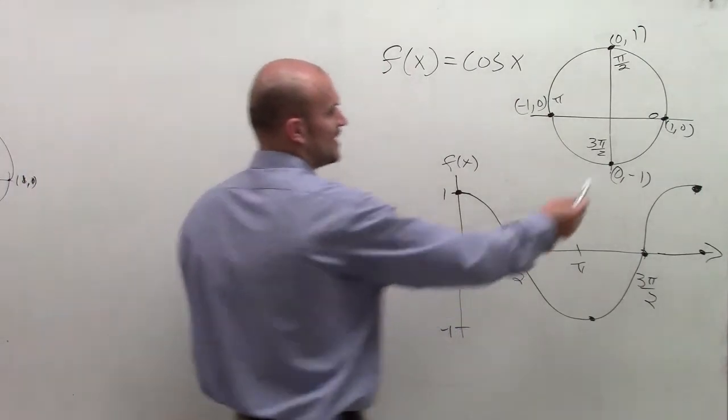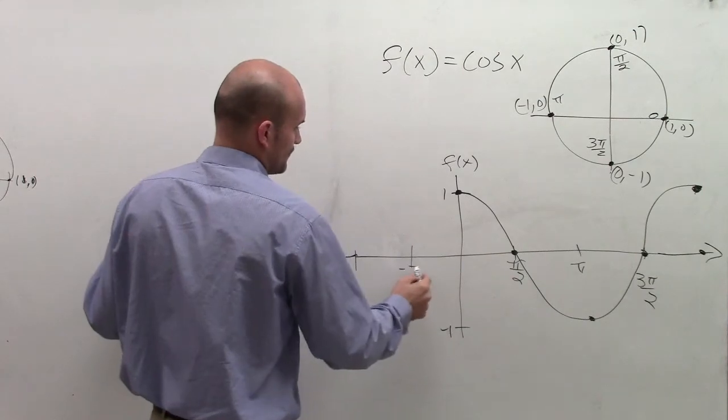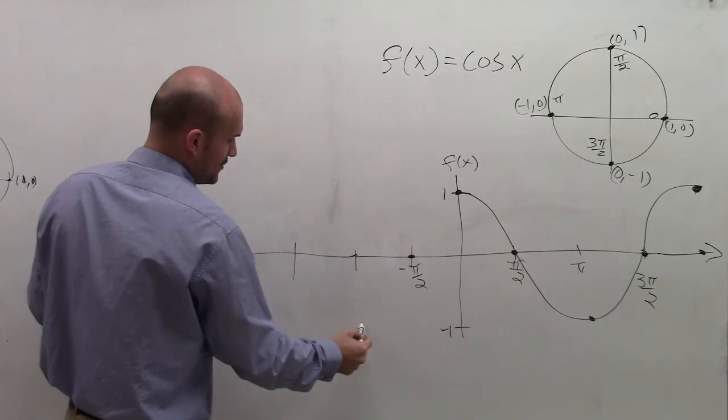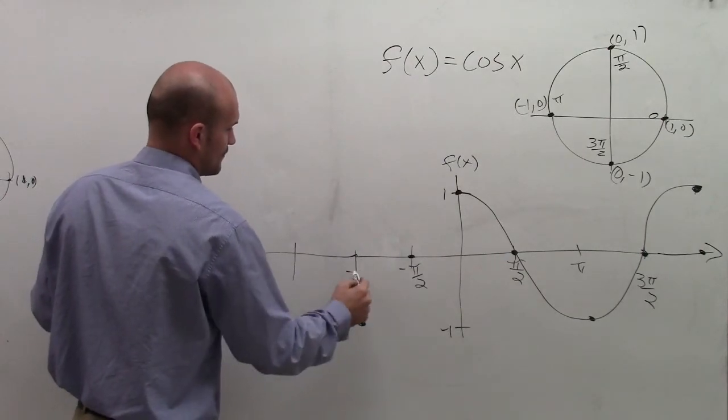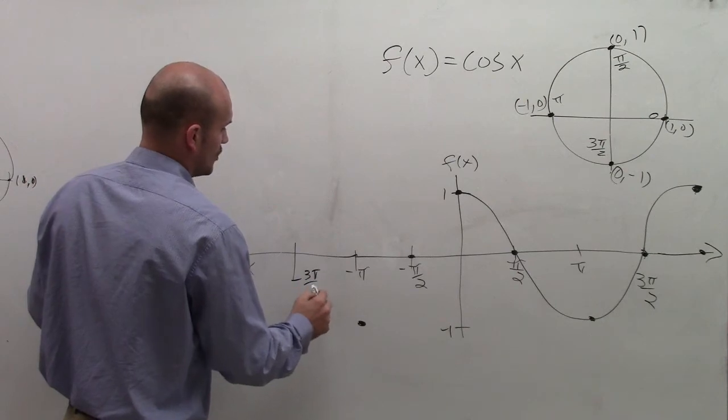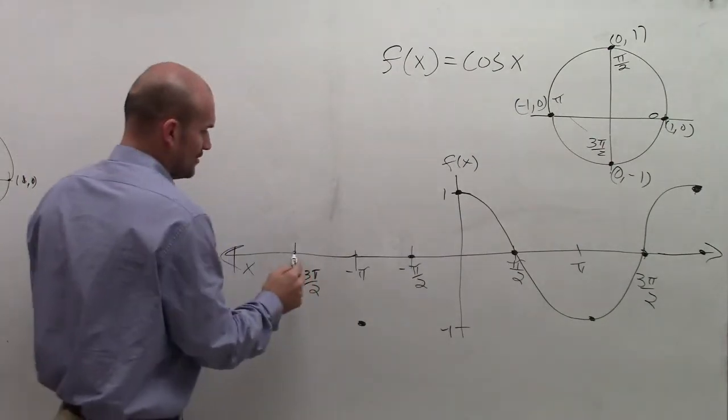So let's look at it, if I did negative π/2, the cosine value is 0. At negative π, my cosine value is negative 1. At negative 3π/2, so if I go negative 3π/2, my cosine value is 0.